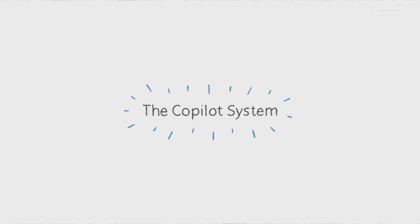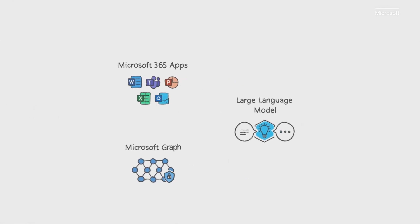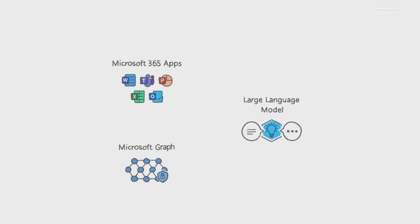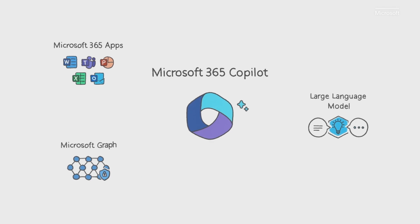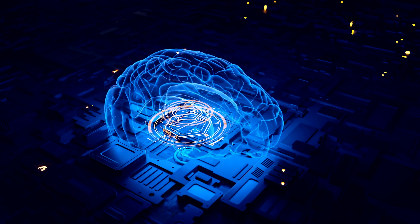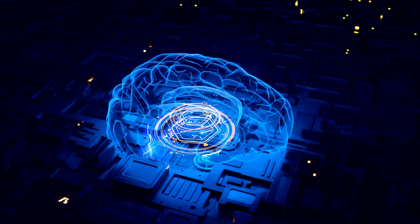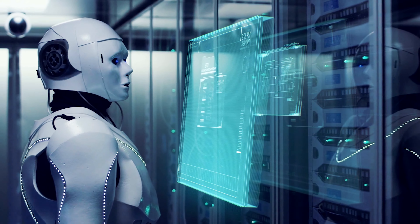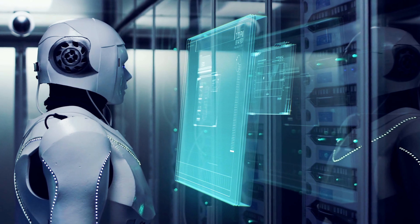Now let's take a closer look at the systems driving these amazing features. It's not just ChatGPT connected to Microsoft 365. Copilot is powered by what Microsoft calls the Copilot system — a sophisticated processing and orchestration engine. It harnesses the power of three foundational technologies: the Microsoft 365 apps, the Microsoft Graph — that's all your content and context — along with a large language model, a creative engine capable of producing human-like readable text, all accessible through natural language.